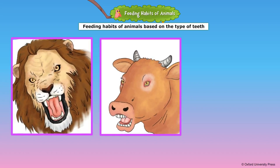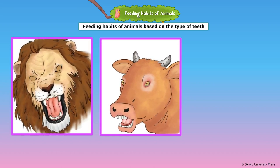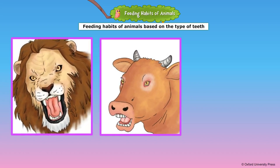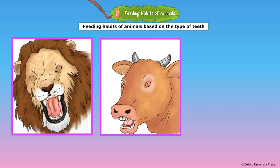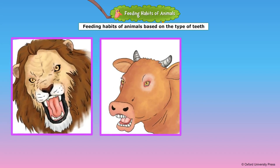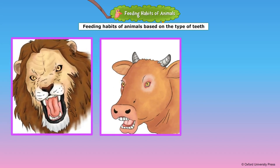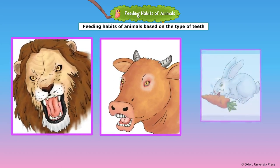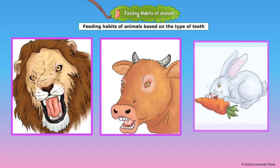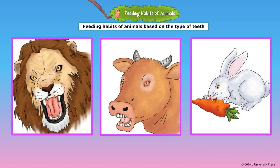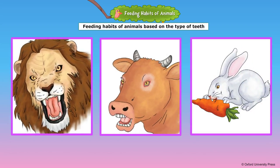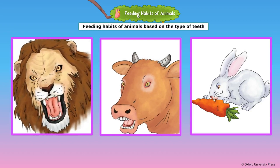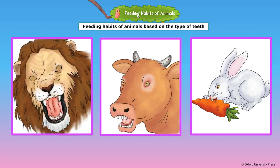Animals such as cows and buffalos first swallow their food without chewing it. Later, they bring the food back to their mouth from their stomach and chew it slowly for a long time. This is called chewing the cud. These cud-chewing animals have strong, broad back teeth.